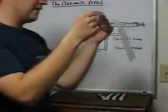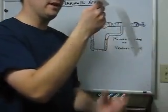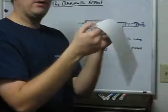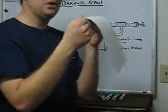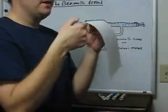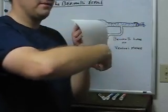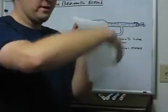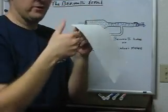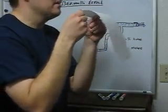Hopefully everybody can see this. I just have a piece of paper hanging down, and we know that gravity is kind of pulling it down. What I'm going to do is just blow some air across this piece of paper. Now, the intuition is that if I blow air, it's just going to make it go down further — that if I blow on it, the air is just going to kind of push it down further. So let's go ahead and see what happens here.